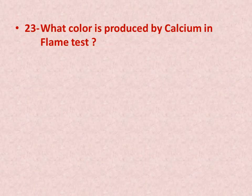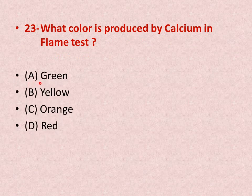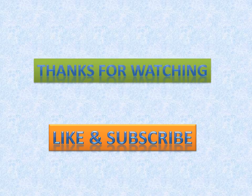Question number twenty-three: what color is produced by calcium in the flame test? Options: A is green, B is yellow, C is orange, D is red. The right answer is D — calcium produces red color in the flame. That concludes this video. There are many more videos in the pipeline, so subscribe to the channel to stay updated. Thanks for watching.